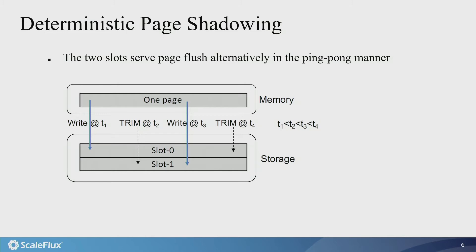For each B+ tree page, the two slots at the fixed location in the logical storage space serve memory to storage page flush alternatively in a ping-pong manner. So once the page has been flushed from memory into one slot, B+ tree will issue a trim command over the other slot, so it doesn't consume physical storage space. This is the same as conventional page shadowing, with the difference that the location of the shadow page is now fixed.